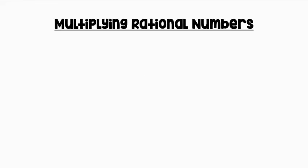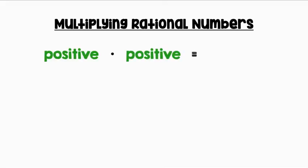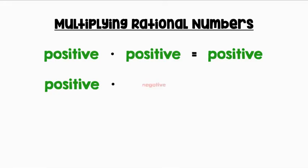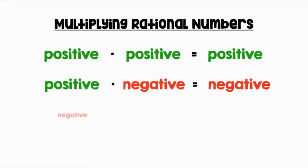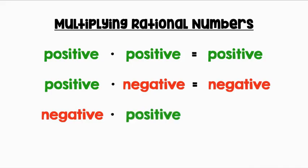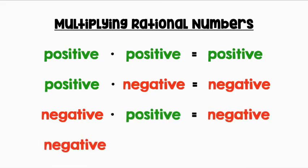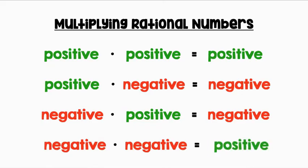Let's review our rules for multiplying rational numbers. A positive times a positive equals a positive. Positive times negative equals negative. Negative times positive equals negative. And negative times negative equals positive.